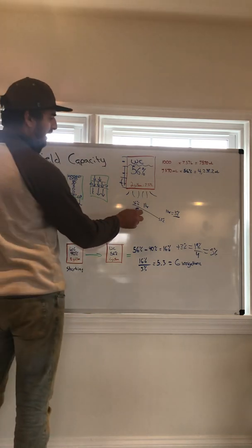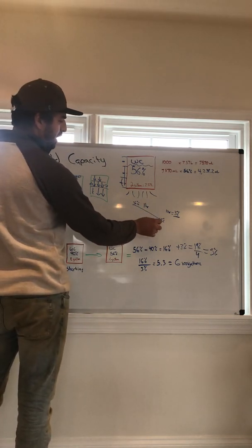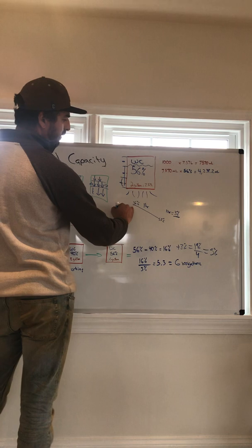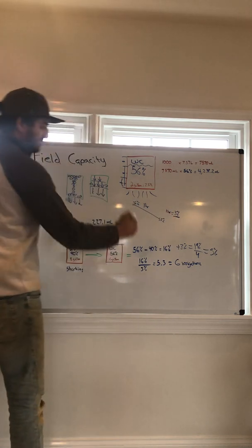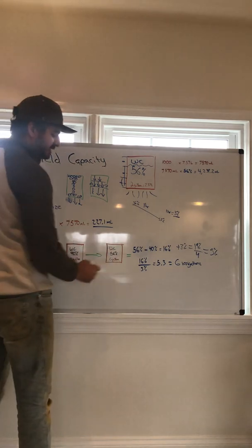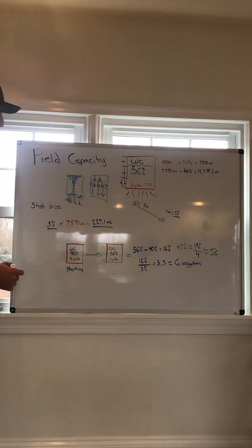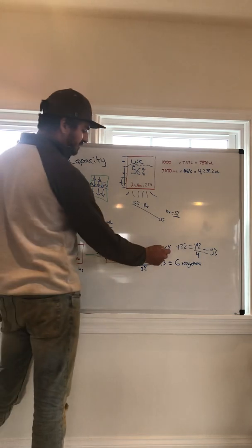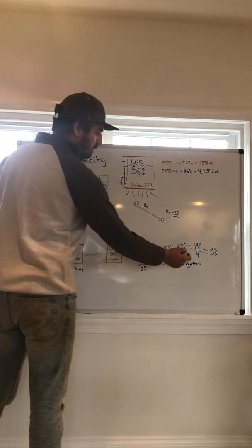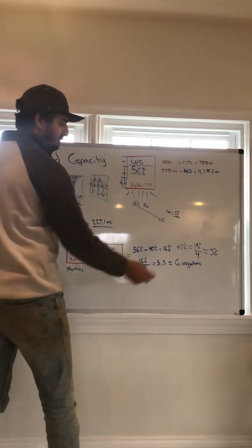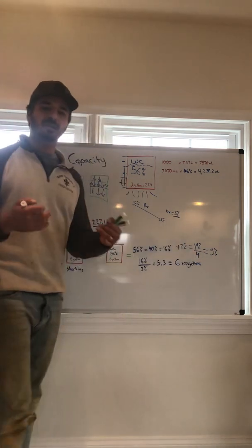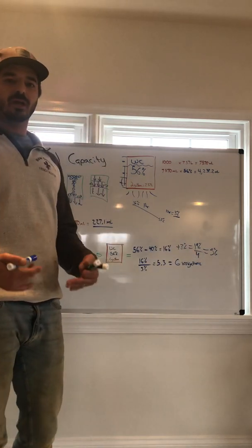So if you guys followed how I did that, what I did is I said, if my time of dry back typically in one hour is 3%, then if I want to resaturate the medium from 40% to 56% in one hour period of time, there's a delta of 16% plus the 3% that we dry back per hour, giving us 19%. And I divided that by four irrigations because we're going to apply one irrigation every 15 minutes.